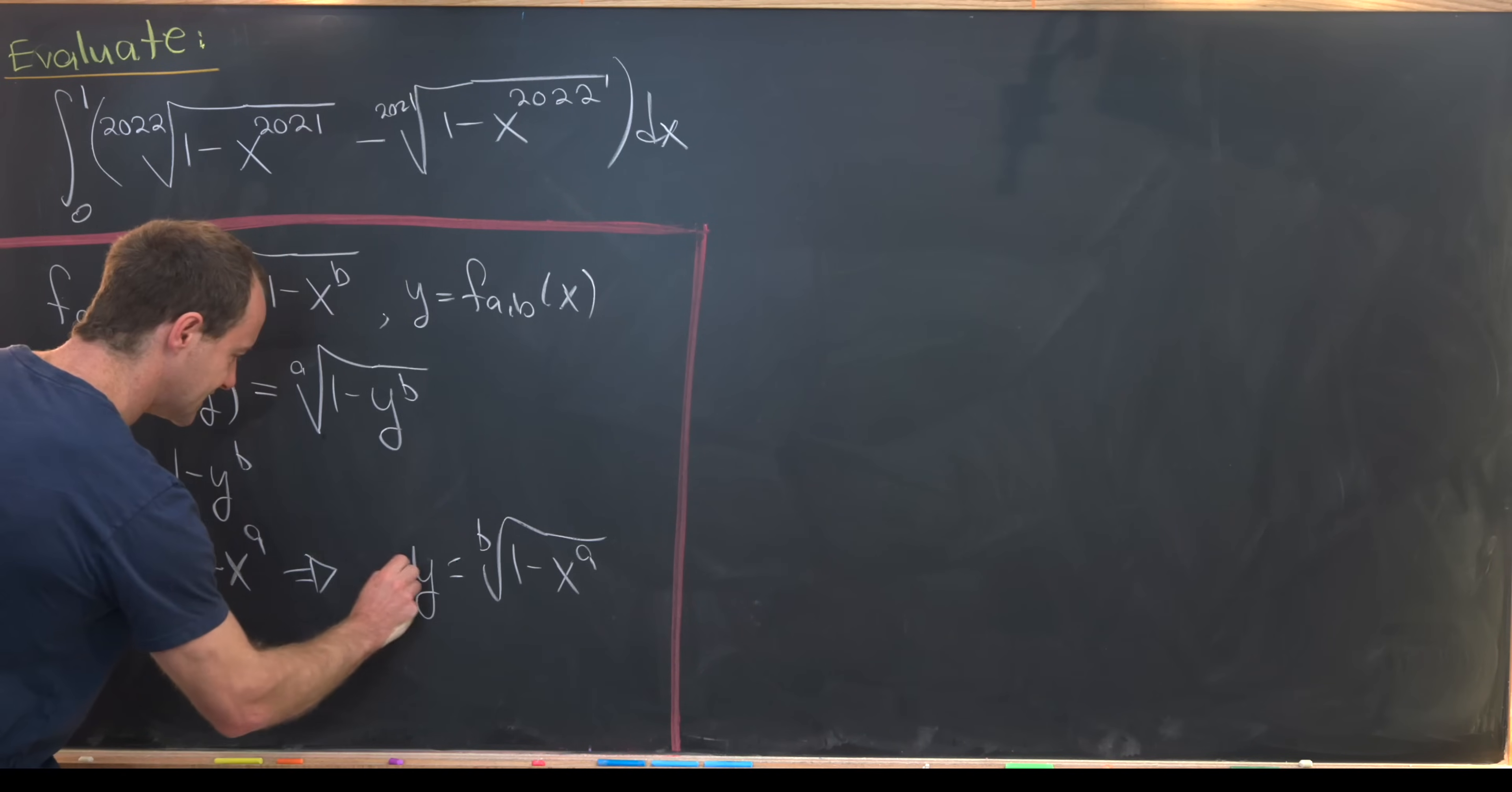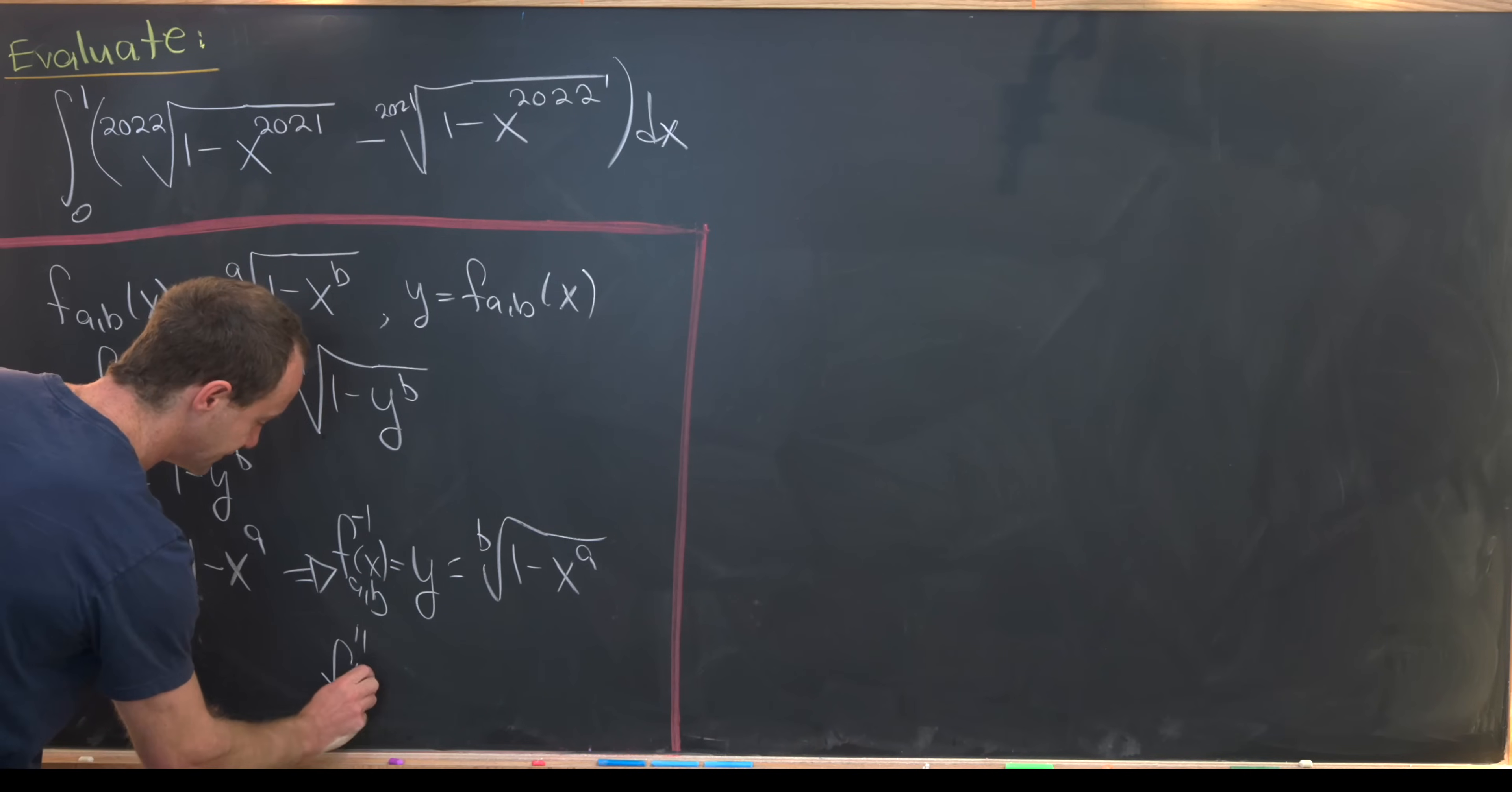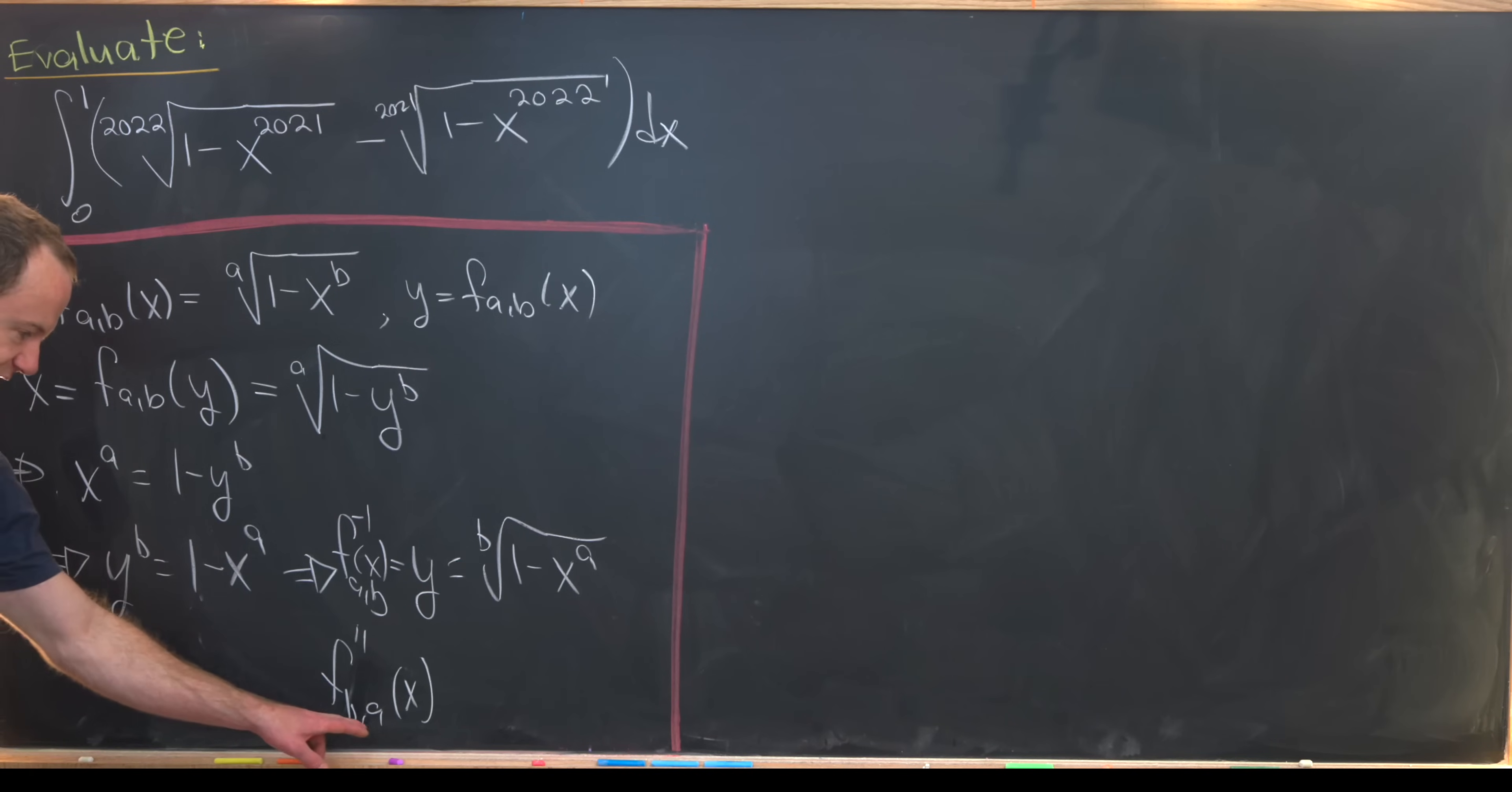Let's notice that this is exactly f inverse of x, but it's also equal to f sub ba of x. So in other words, if we switch these indices here, we invent the inverse function.